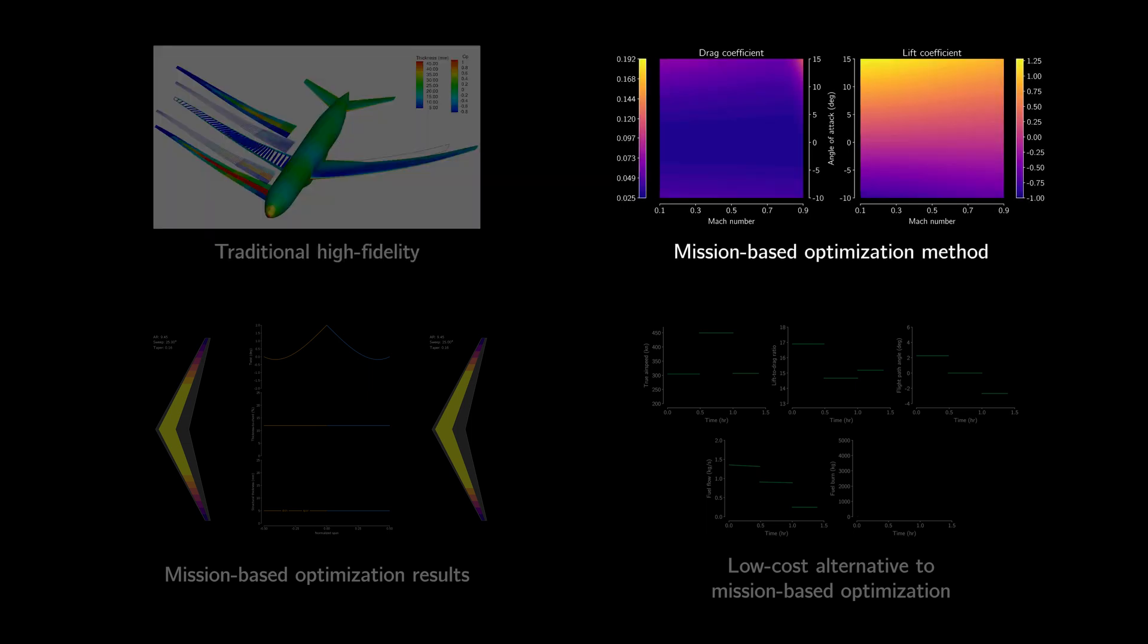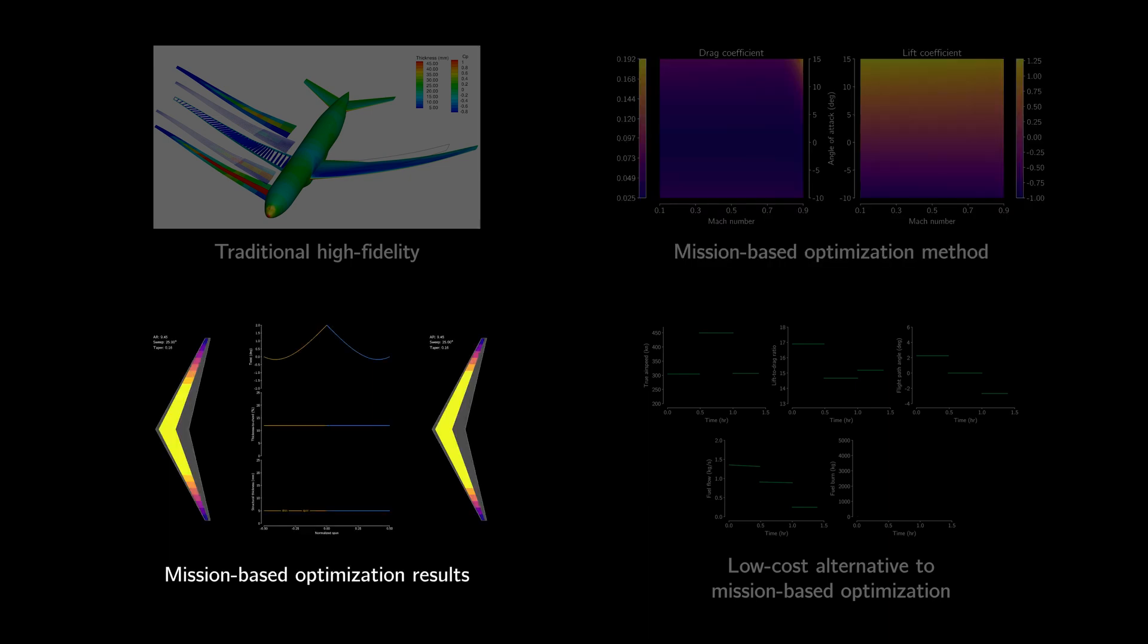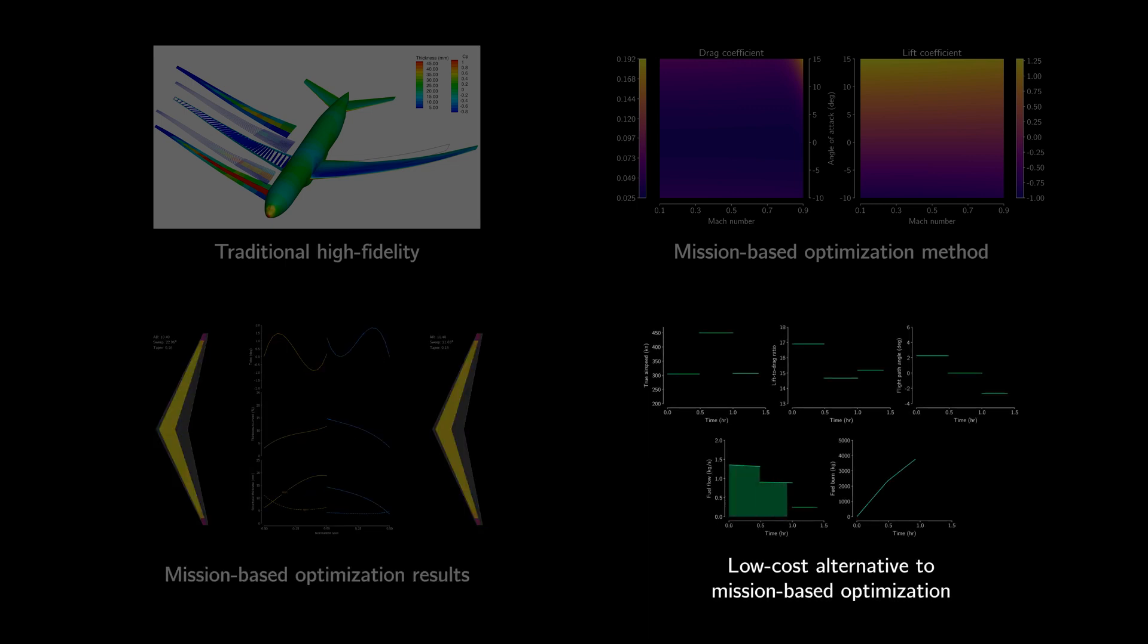Next, I'll introduce our new approach that uses a detailed mission analysis model in the aerostructural optimization to accurately compute the fuel burn throughout the mission. Then, I'll discuss the results of the optimization using this new approach and explain how it finds a better result. Finally, I'll propose a new low-cost fuel burn estimate that can be easily used within traditional high-fidelity aerostructural optimization codes.